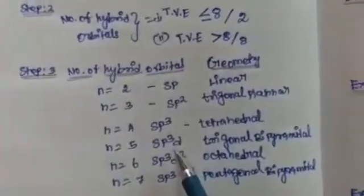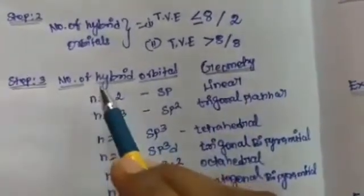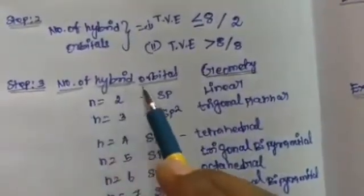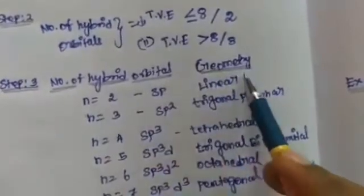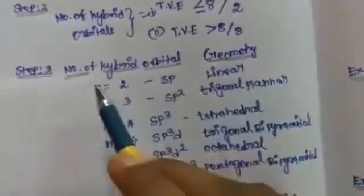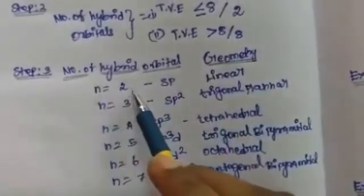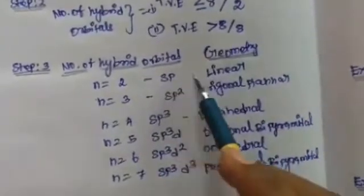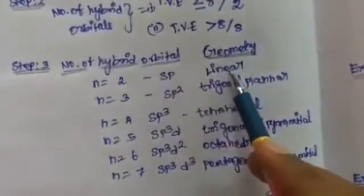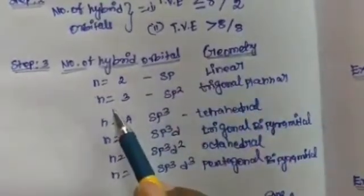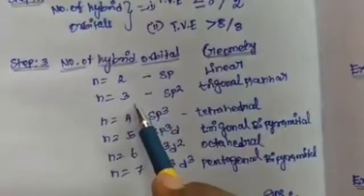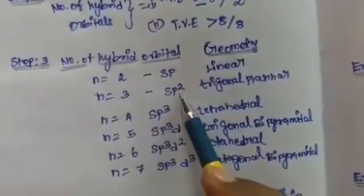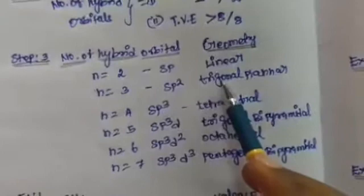Step 3: determine hybridization and geometry from the number of hybrid orbitals. When the number of hybrid orbitals is 2, hybridization is sp and geometry is linear. When the number of hybrid orbitals is 3, hybridization is sp2 and geometry is trigonal planar.